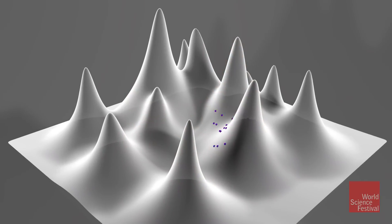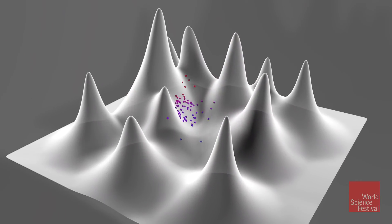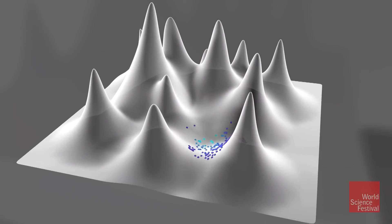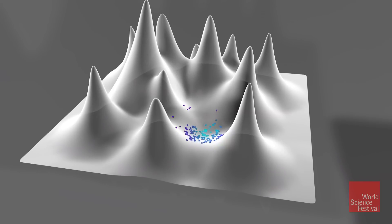So there's annealing where you carefully control what's called the temperature, which tells you how frequently you'll be willing to go uphill. When the temperature is warm, you're willing to go uphill a lot, and as things cool down, you'll tend to stay in those minimums.